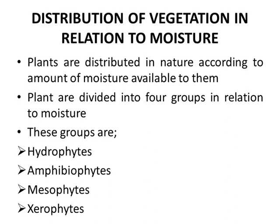Distribution of vegetation and relation to moisture: plants are distributed in nature according to the amount of moisture available to them. Plants are divided into four groups in relation to moisture: hydrophytes, amphibiphytes, mesophytes, and xerophytes.